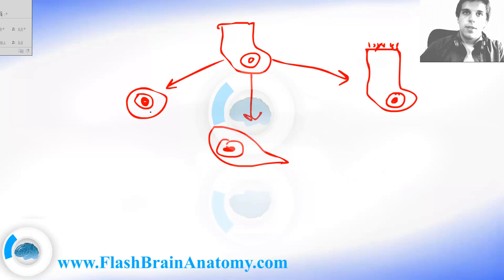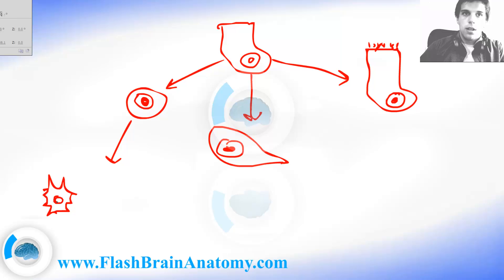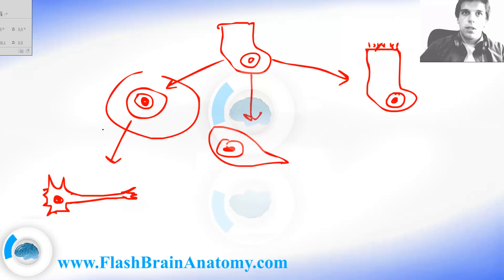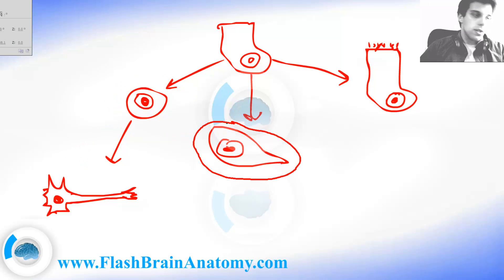The neuroblasts differentiate to neurons, and of course the neurons have dendrites and axons. Here is the axon, with the axon terminal at the end. So those are the neuroblasts that develop into neurons, and those were the glia cells.